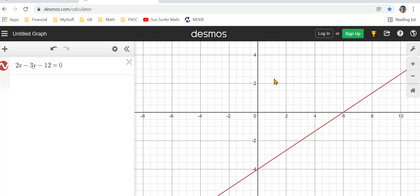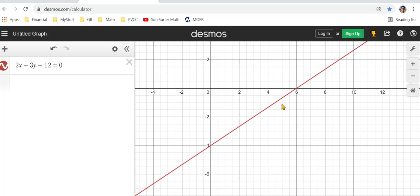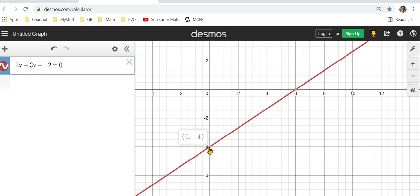Well, there's really not much to do, but what we can do is we can confirm what we've already done algebraically. We can see that the y intercept was 0, negative 4, and that the x intercept is 6, 0.